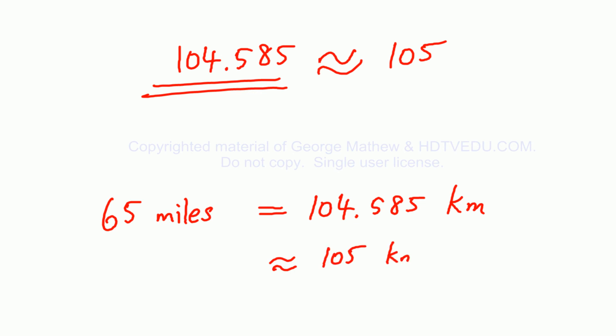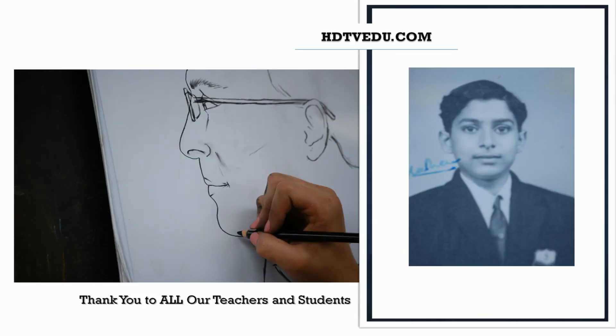104.585 is approximately equal to 105. 65 miles converted to kilometers is equal to 104.585 kilometers, and that is roughly equal to 105 kilometers. And this is George Matthew signing off. Good luck, thank you.